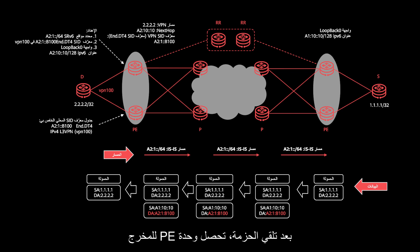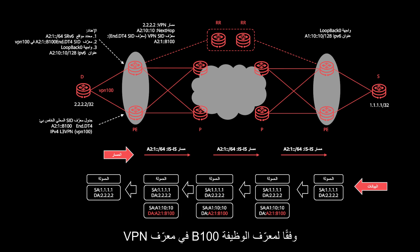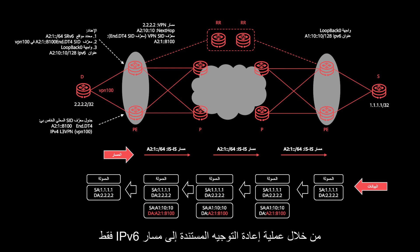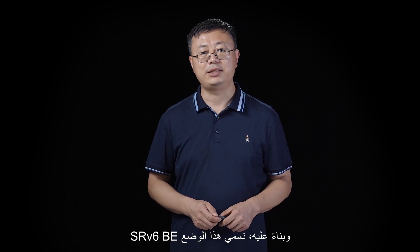After receiving the packet, the egress PE gets the corresponding VPN routing table according to the function ID B100 in the VPN ID, then searches for the route and forwards the packet to the corresponding CE. In this process, the packet traverses the entire SRv6 domain through only IPv6 route-based forwarding. We call this mode SRv6 BE.